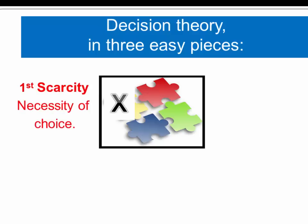We can cross out one of these puzzle pieces, we only need three. And the first piece is scarcity. So scarcity is what creates the necessity of choice. If there was no scarcity, we would not have to choose. We could eat our cake and have it too. But the idea behind scarcity is that everything requires a choice, and that includes an all-you-can-eat buffet. You can't eat everything there constantly, so you have to choose what you're going to eat even in an all-you-can-eat buffet.